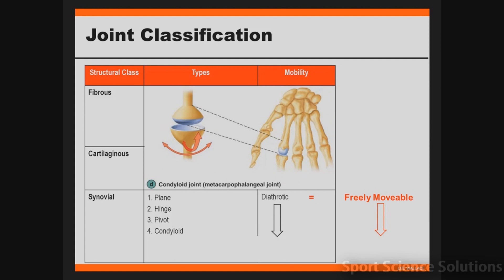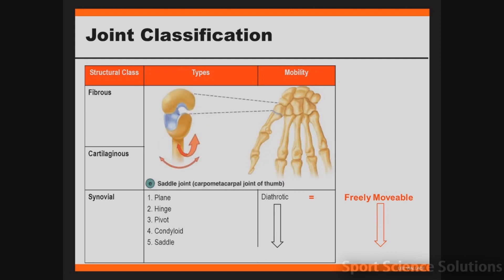The fourth type of synovial joint is called a condyloid joint. The example shown is the joint found between the metacarpals and the phalanges in our hand or fingers. All condyloid joints look similar to a ball and socket joint, but rather than being a circle it's an oval — kind of like an oval-shaped ball and socket joint. The fifth type of synovial joint is called a saddle joint. An example occurs at the thumb. A saddle joint looks like a convex and a concave shape fitting together.